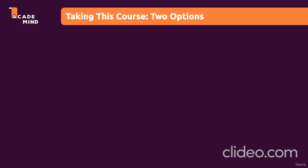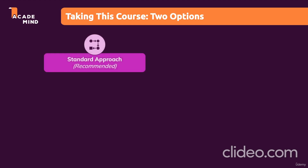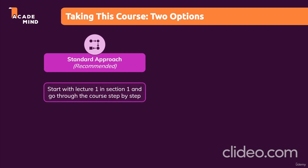This Django course is packed with content, and therefore I have two options — two paths for you to follow. The first option is the standard approach, which is my clear recommendation for how to take this course. With this approach, you simply take the course step by step, starting in lecture one and section one, and then move through it lecture after lecture, section after section. All these sections and concepts build up on each other, so going through the course this way will give you the most out of it, and you will learn about all those key Django features step by step in depth.